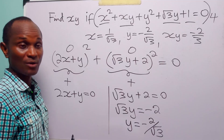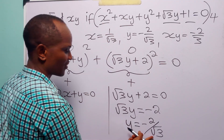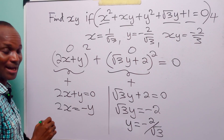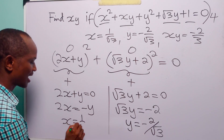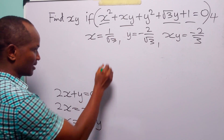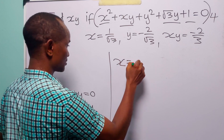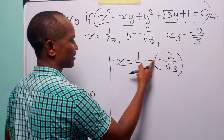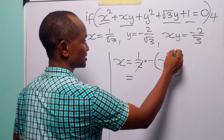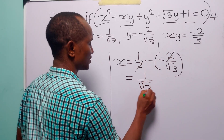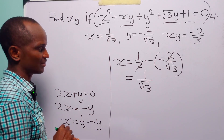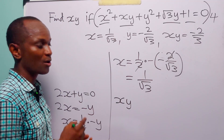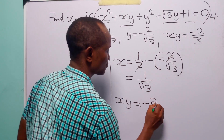From 2x plus y equals 0 we get 2x equals minus y, so x equals minus y over 2. Substituting y equals minus 2 over root 3 gives x equals 1 over root 3, exactly what we calculated using the first method. To find xy we multiply x by y, and we get minus 2 over 3.